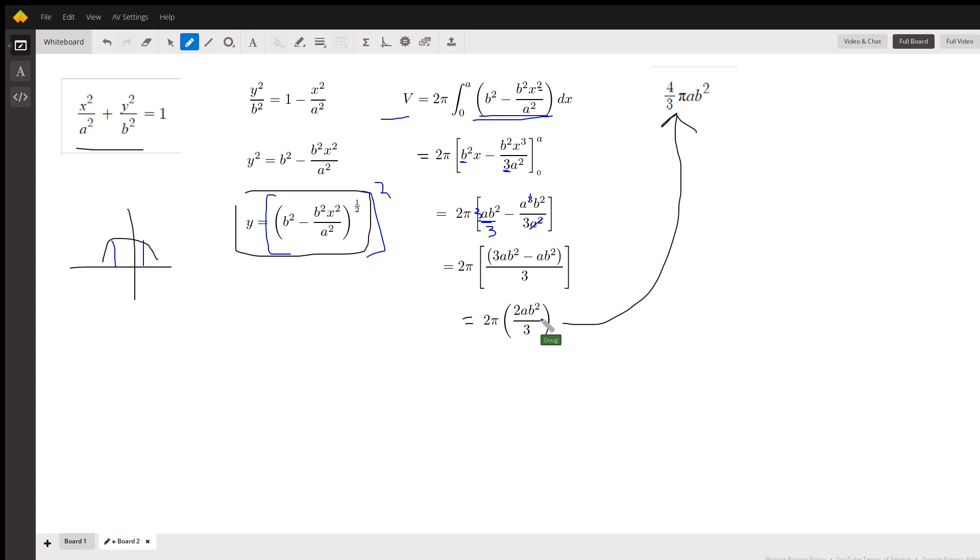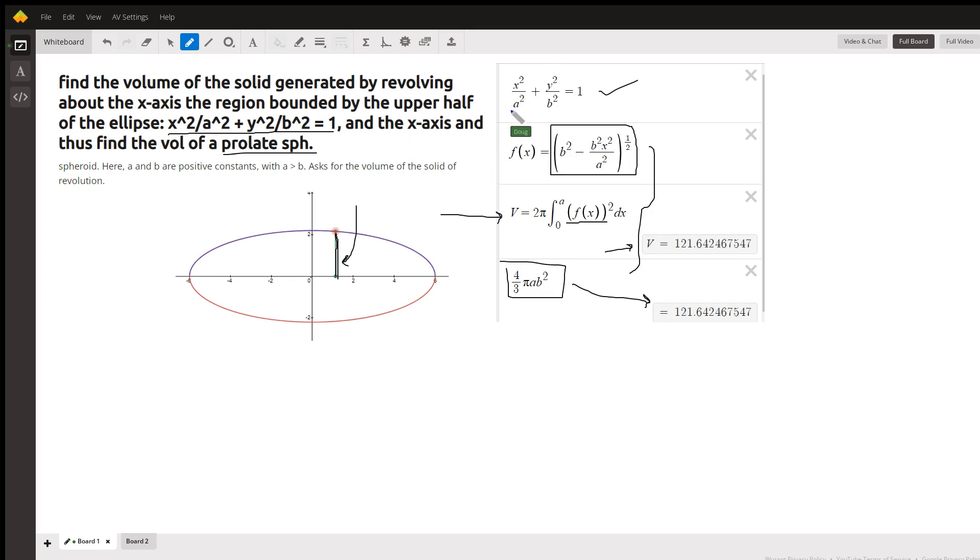Multiply factors together, there's your answer. Okay, that's a formula for the volume of a prolate spheroid. There you go, hope that helped. If you have any questions, post a comment.